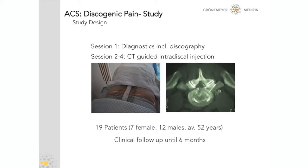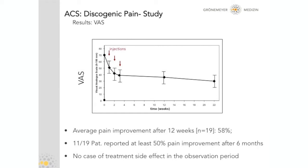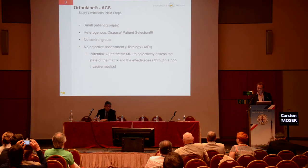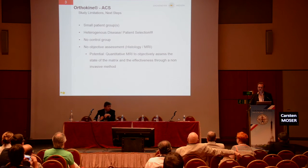In the first step, all patients underwent discography indicating discogenic pain by positive reaction. They then received three CT-guided intradiscal injections. Nineteen patients were followed up over six months. Results showed an average pain improvement of 58% after 12 weeks. Eleven out of 19 patients reported at least a 50% pain reduction still after six months, with no infection or side effects. It was a small patient group with heterogeneous disease, making patient selection very important.